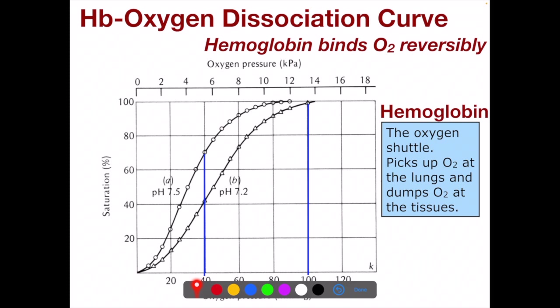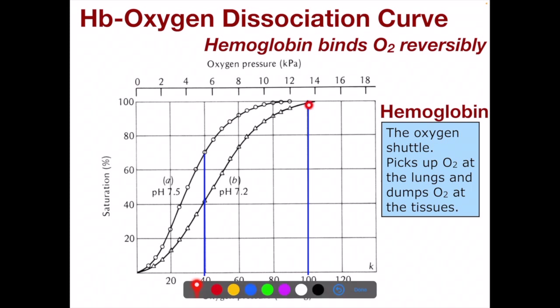In the lungs, where saturation is at about 100%, that means 100% of the hemoglobins are carrying oxygen. Down on the x-axis, we have the oxygen pressure. In the lungs, it's at about 100 millimeters of mercury, or about 13.8 kilopascals. The x-axis basically represents the environment — the concentration of oxygen where you happen to be at the moment. In the lungs, it's quite high.